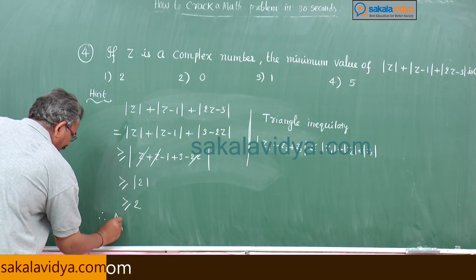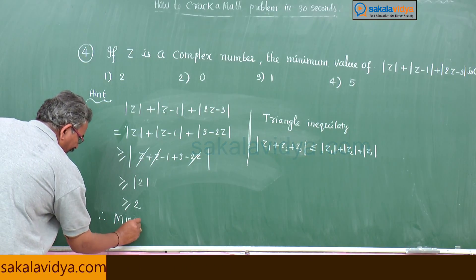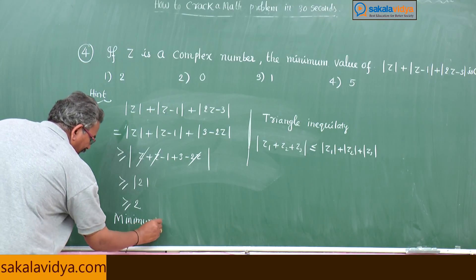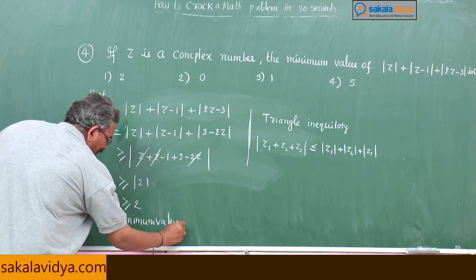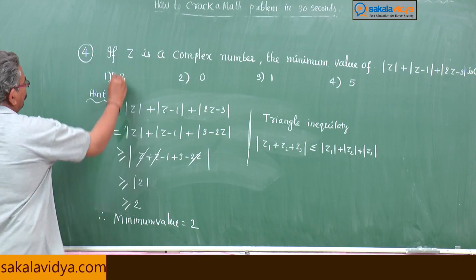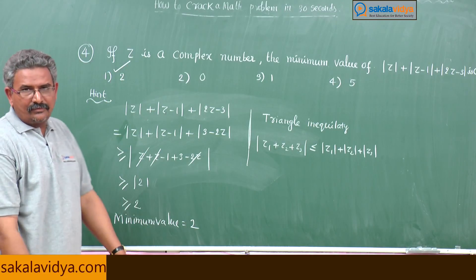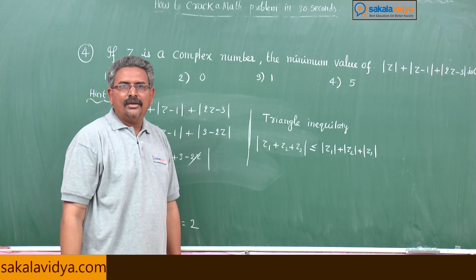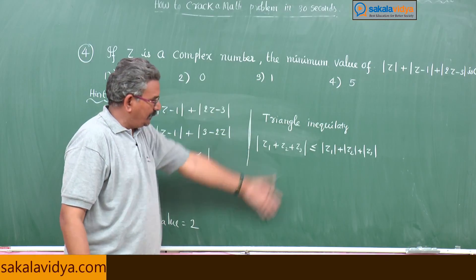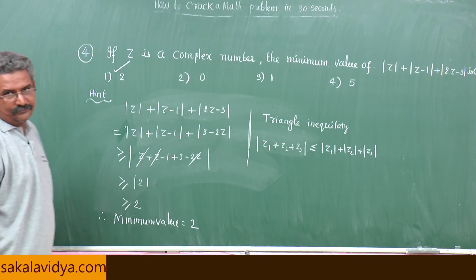Therefore minimum value equals 2. So first option is the right option. Have you followed? I hope that you might follow. So note down in your notes.